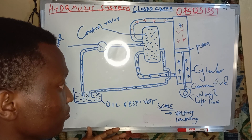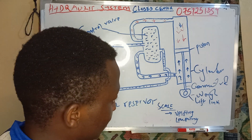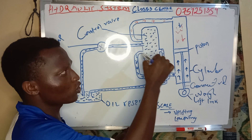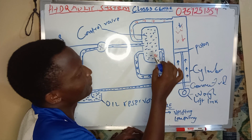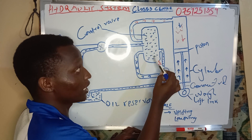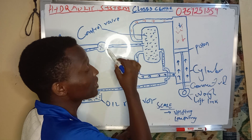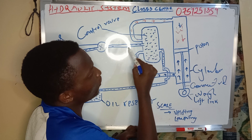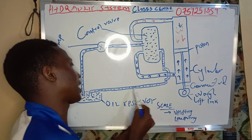Now assume the tractor is settled — it does not want to lift anything, does not want to lower — it is on rest, it is on neutral. After the oil has been pumped into the control valve, mark this keyword: where does the oil go after it has been pumped into the control valve? In neutral, in the closed-center system, the oil that was forced here at high pressure will get inside this channel and will get back to the reservoir.